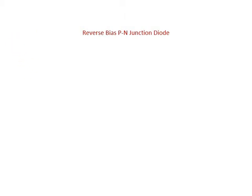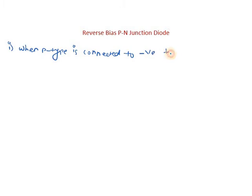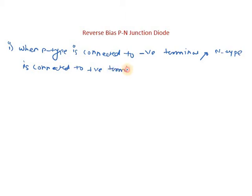Now let us start with what we mean by reverse biased p-n junction diode. The first point: when p-type semiconductor is connected to the negative terminal and n-type is connected to the positive terminal, such a junction diode is called a reverse biased p-n junction diode. This is the simplest definition.